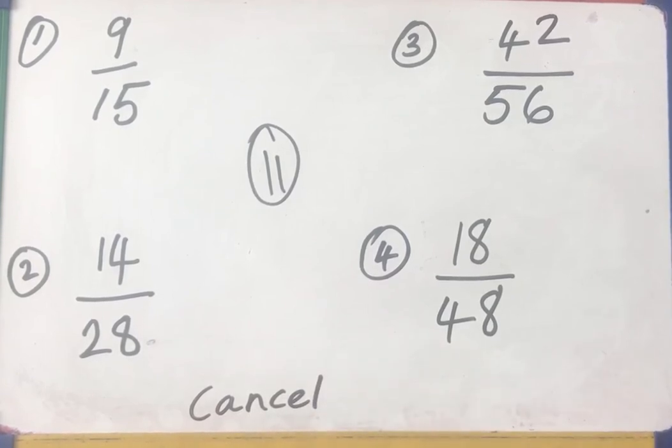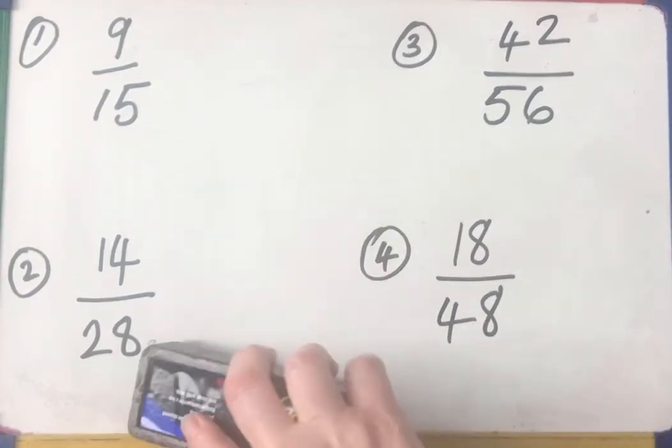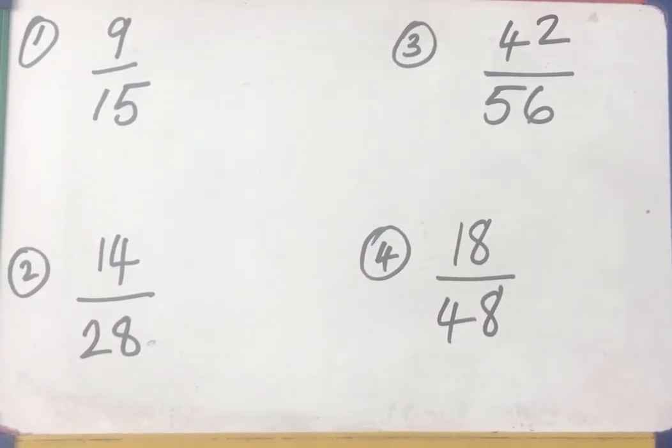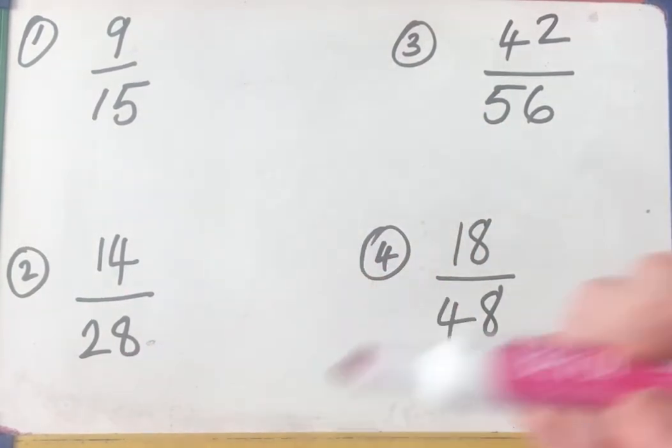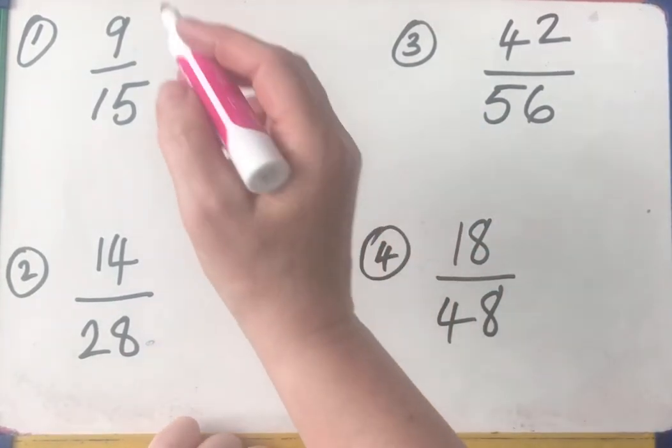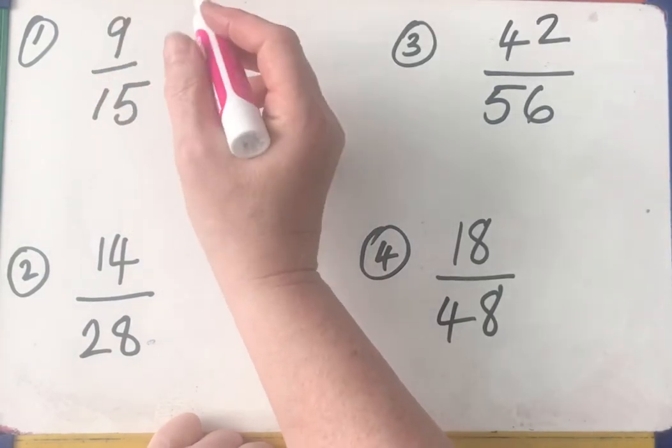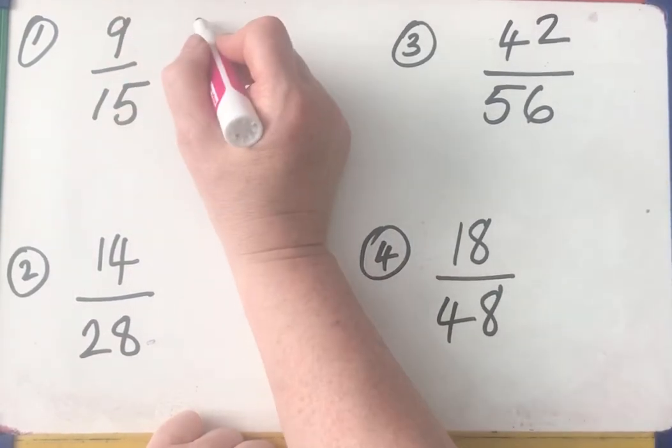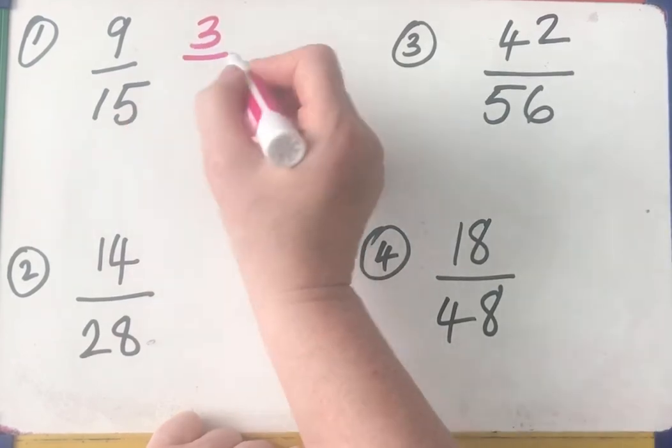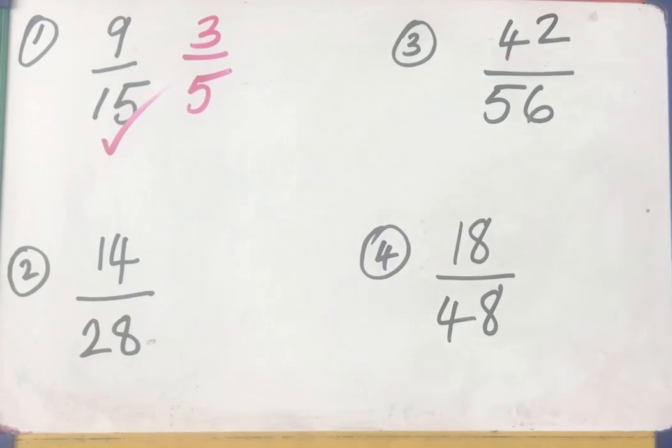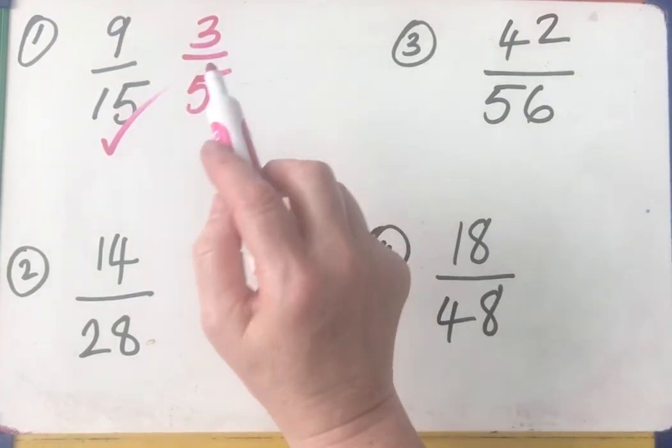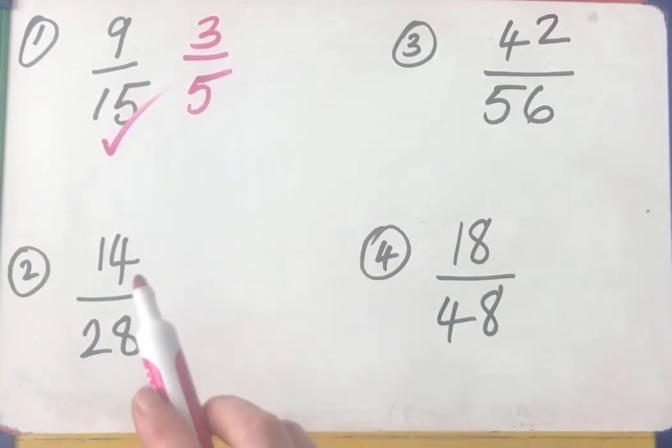Okay, so you've had a go at canceling these down. You've used your times tables, hopefully. Now 9 and 15, I'm looking for a common factor, something that goes into 9 and into 15. Well, into 9 and 15, it's the 3 times table. 9 divided by 3 is 3, 15 divided by 3 is 5. Hopefully you've got that right. And you can double check. Look, 3 threes are 9, 5 threes are 15.